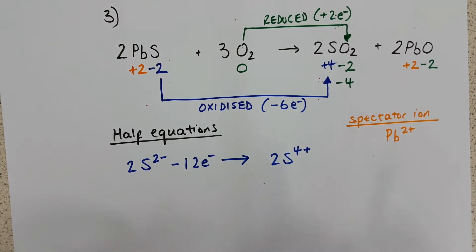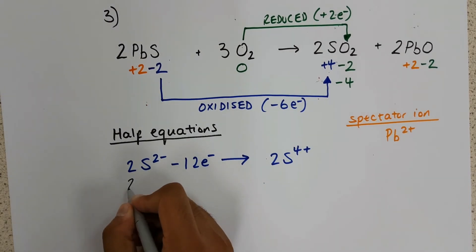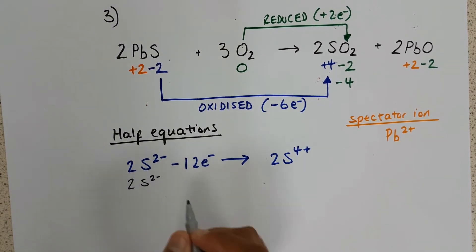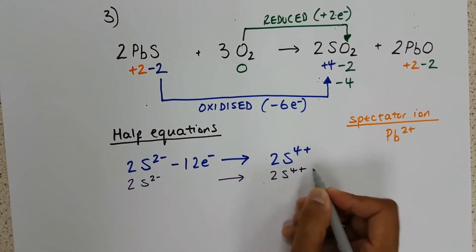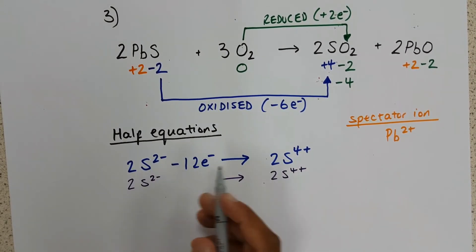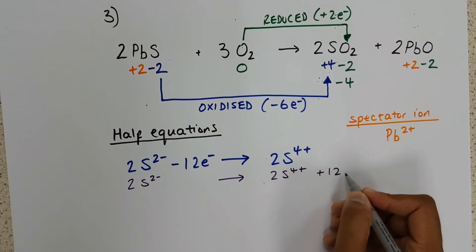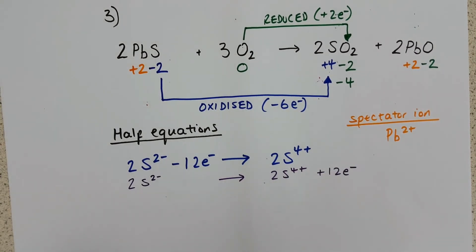And a quick reminder, we can also rewrite this if we wanted to, in a different way. We could actually write 2S2 minus, 2S4 plus, and we can actually take the twelve electrons and add them to the other side. So these are two different ways of writing the same equation.